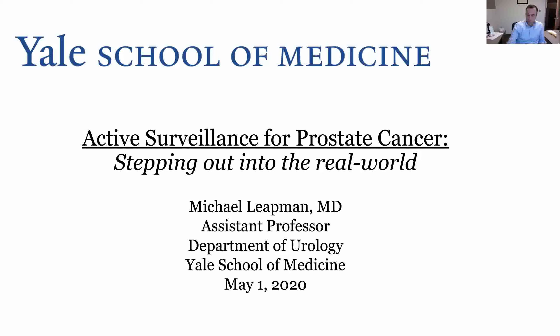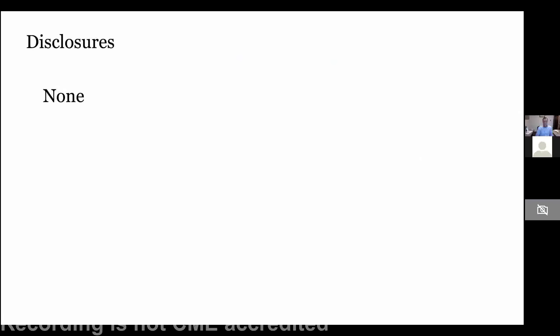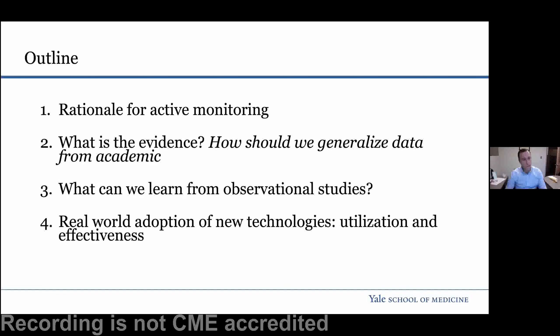By way of disclosures, I have no relevant disclosures. I am going to be speaking about some commercially available genomic tests and other proprietary things, but I have no relevant disclosures. The outline for today: I'll first talk about the rationale for active monitoring of low-risk prostate cancer, go into the evidence, and discuss how and why we can generalize certain pieces of evidence from academic cohorts when implementing them in less-than-ideal conditions. Third, I'll focus on what we can learn from observational studies applied to active surveillance.